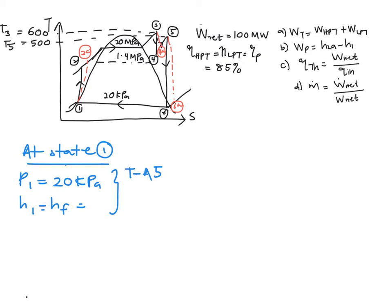So from your table A5 you will have your H1 is equal to 251.42 kilojoule per kg. And since to solve your state 2 over here you are going to make use of your equation of pump, so you will need your specific volume at 1, which is V1 is equal to 0.001017 kilojoule per kg.